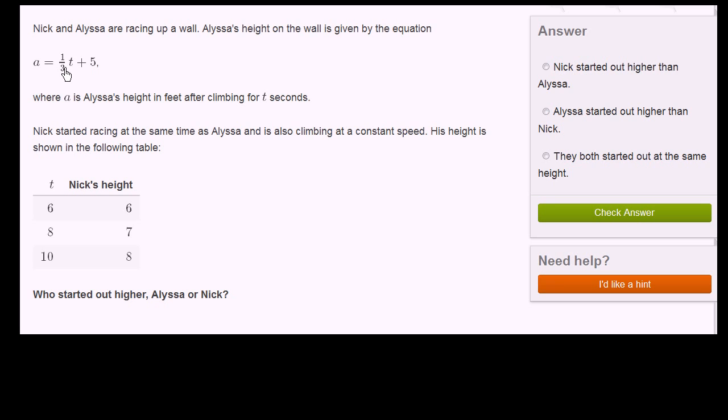For Alyssa, it's pretty straightforward. When time is equal to 0, you have 1/3 times 0 plus 5. Well, that's just going to be 5 feet. So Alyssa's starting position is at 5 feet when time is equal to 0.